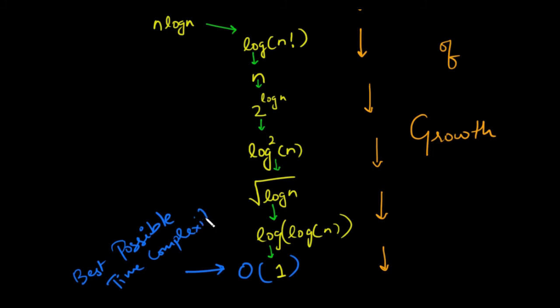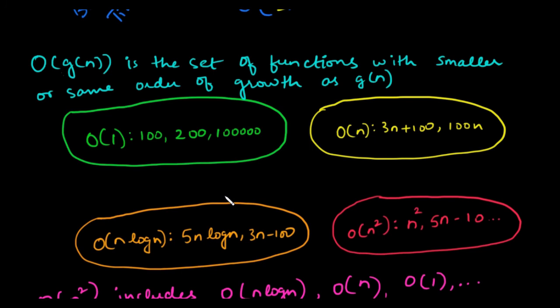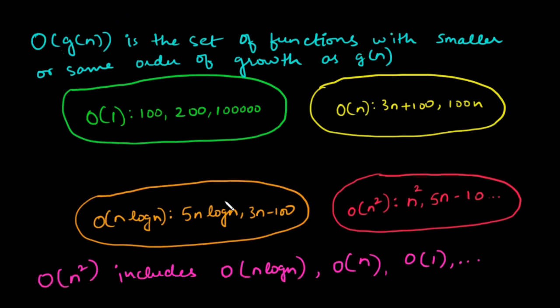With that said, if an algorithm's time complexity is, let's say, O(n^2 + 5n + 2log n), then its complexity would be reduced to O(n^2).